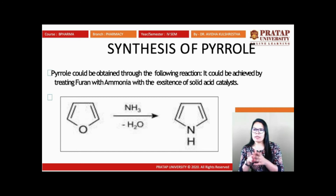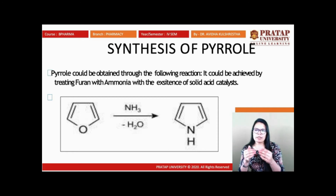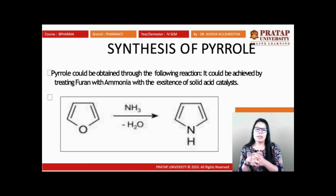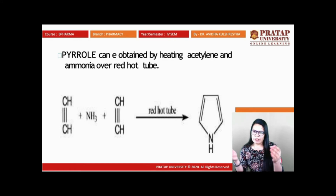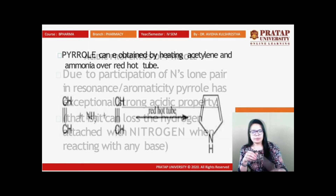Another way to synthesize pyrrole is from two molecules of ethyne (acetylene) reacted with ammonia in a red-hot tube at high temperature, which generates pyrrole. This is another method to produce pyrrole.